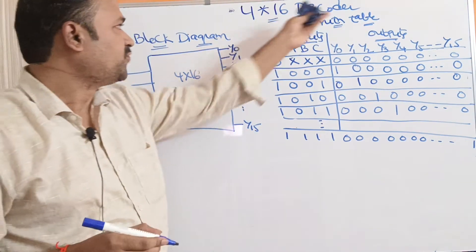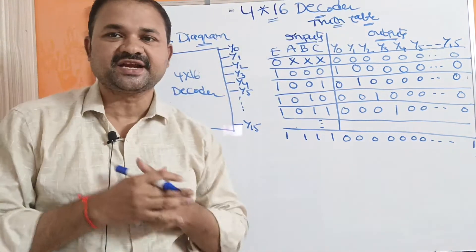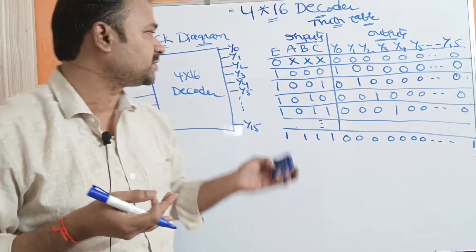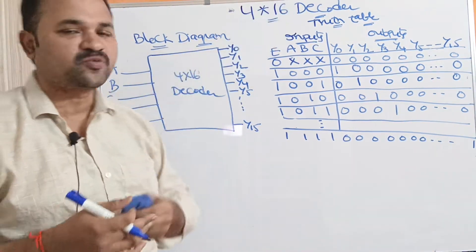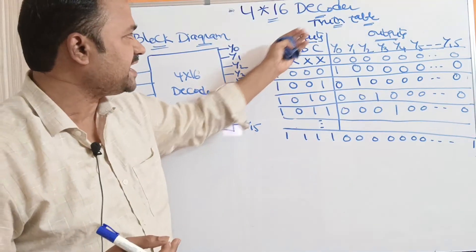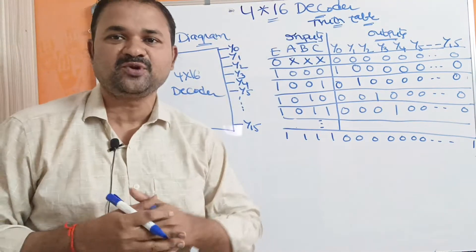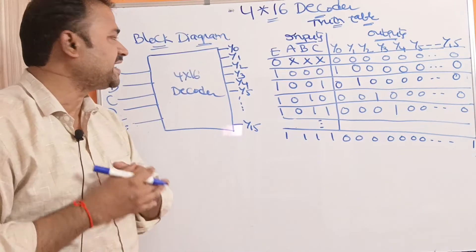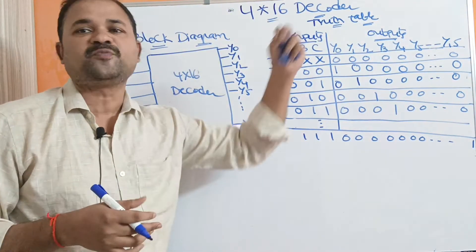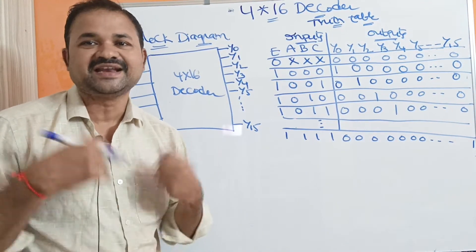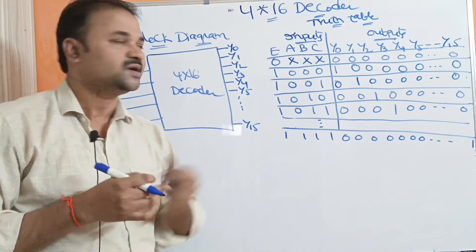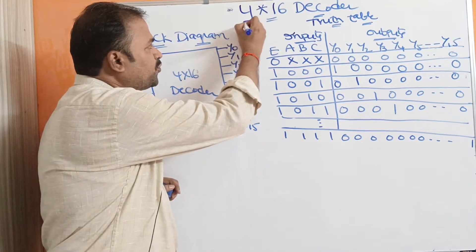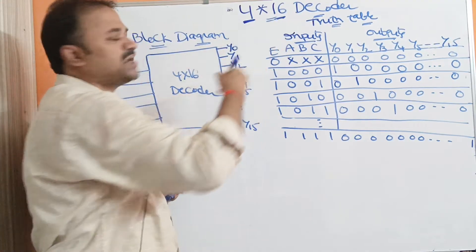Let us discuss about the 4 by 16 decoder. In this video, we are mainly discussing about the block diagram of a 4 by 16 decoder, as well as the truth table and logical circuit. First, let's see the block diagram. The name itself specifies the meaning — a 4 by 16 decoder has 4 inputs and 16 outputs.